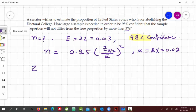We would have Z sub alpha by 2, so that would be equal to Z sub 0.02 divided by 2, so 0.01.